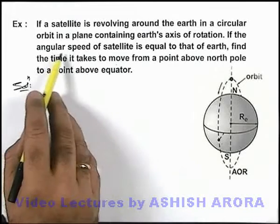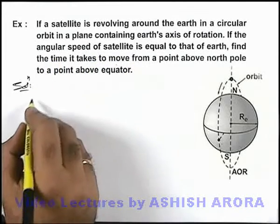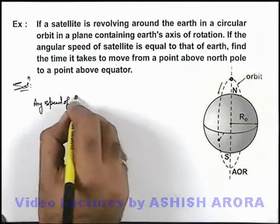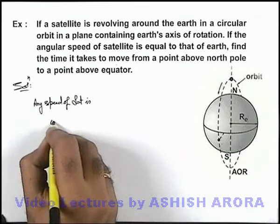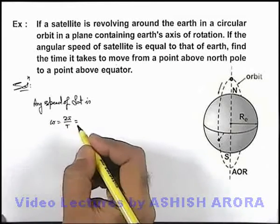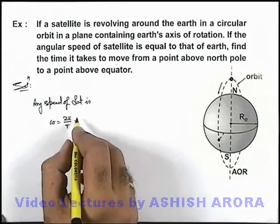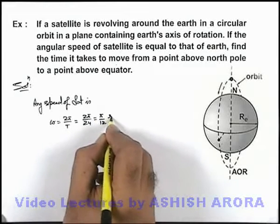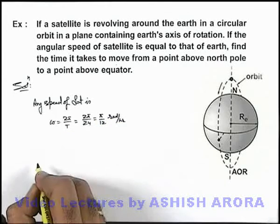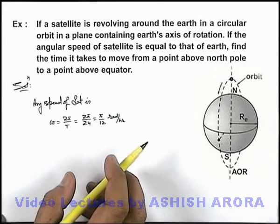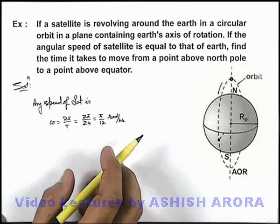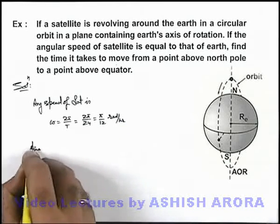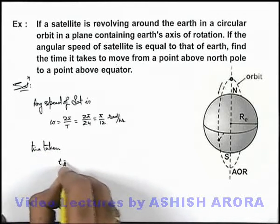As we are given that the angular speed of the satellite is equal to that of earth, we can write that the angular speed omega equals 2π divided by the time period of revolution. We know that earth's rotation period is 24 hours, so omega is 2π/24, which equals π/12 radians per hour. For moving this satellite from the north pole to a point above the equator, it covers an angle of π/2. So time taken can be directly given as t equals θ divided by omega.